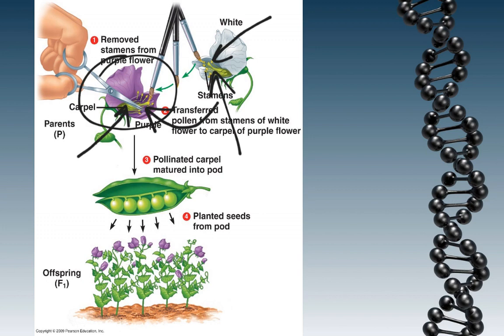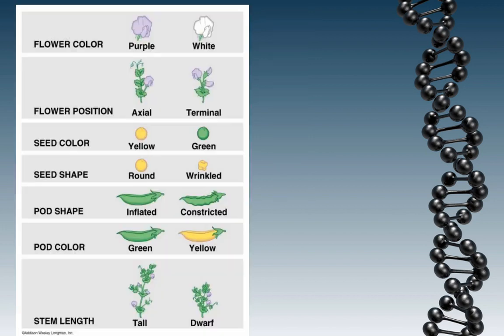And that way he could make sure which flowers were actually pollinating, and therefore fertilizing other flowers. After some time, he would wait for the pea pods to develop, and he would get the seeds and plant them, and see what type of offspring were produced from that cross.